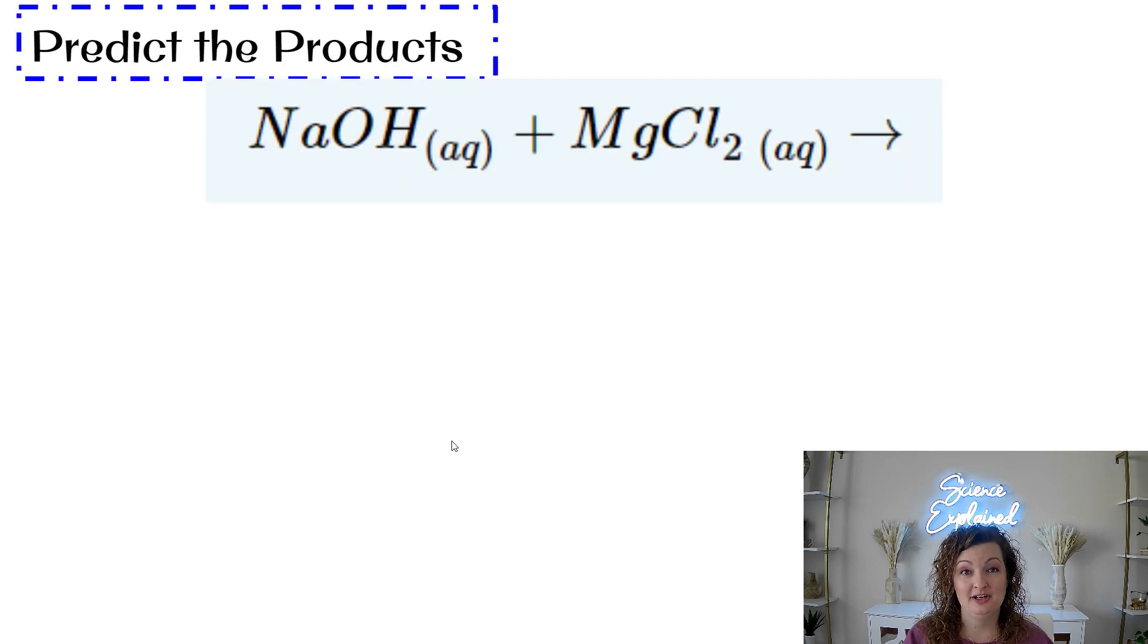Okay. So now we get to the predicting products part, right? So we're given an example on a test or a quiz, and we only have our reactants. We don't have our products. Well, if you guys remember back from when we learned about predicting products before, you're going to do outside, outside, inside, inside. If you don't remember that, I can link that down below for you and you guys can get like a full recap of that one.